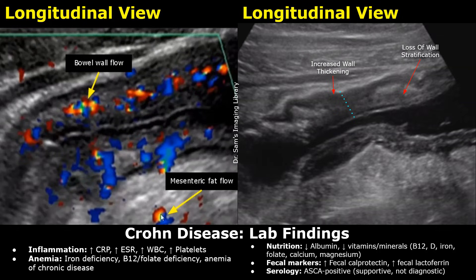First we will look at which lab findings can appear abnormal in Crohn's disease. Some of them are more specific. In such patients, CRP, ESR, white blood cells and platelets can be elevated. Anemia may occur in cases of bleeding and chronic disease.